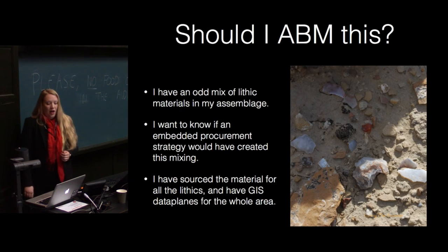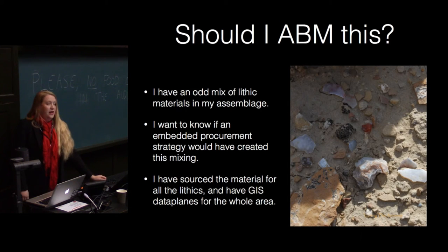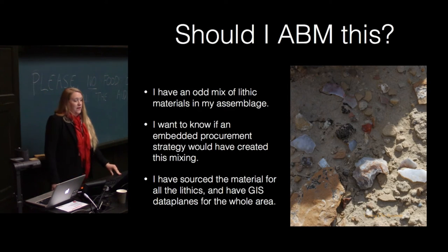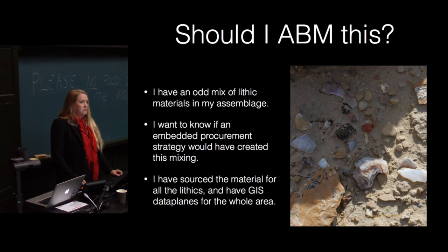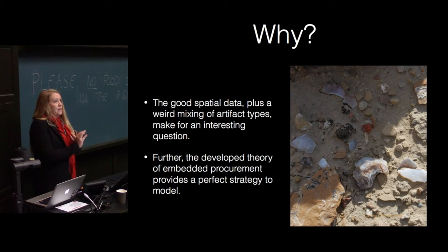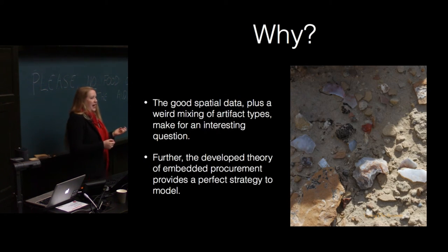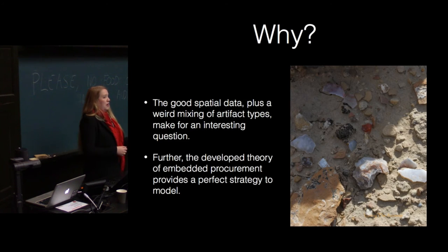Question two: I have an odd mix of lithic materials in my assemblage — knife river flint, obsidian, etc. I want to know if an embedded procurement strategy would have created this mixing. I've sourced all the lithics from my site, I have GIS data plans for the whole area, and I know where sources are. Should I ABM this? Yes — definitive yes. Why? Good spatial data, weird mixing of artifact types, an interesting question about why people were going out of their way to get materials from distant sites. The developed theory of embedded procurement provides a strategy to model. All models are based on theory — theories are just verbal models in our heads, and we make formalized models to test those theories.